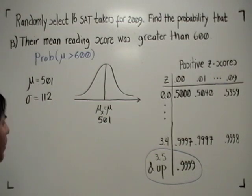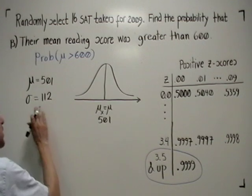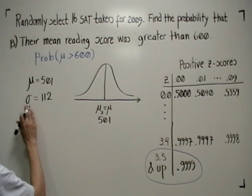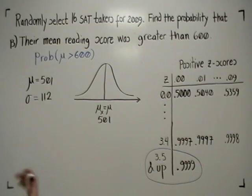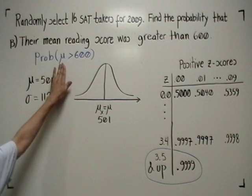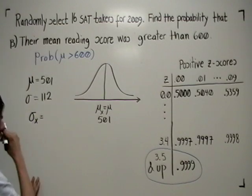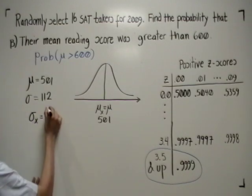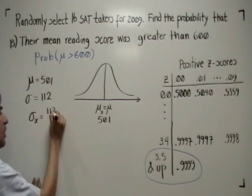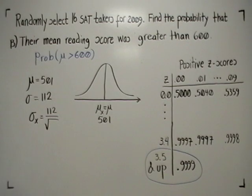And I also obtained from the original distribution that sigma, the standard deviation, is 112. Now, what is the standard deviation for the distribution of the means? The central limit theorem says that that standard deviation is given by the standard deviation of the original distribution over the square root of the sample size.